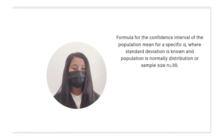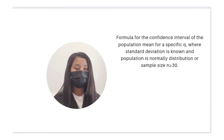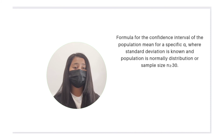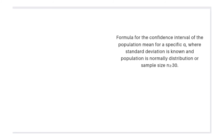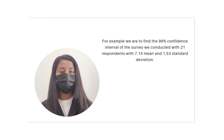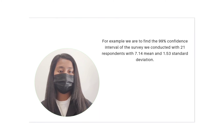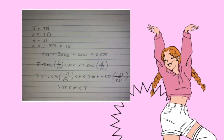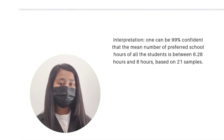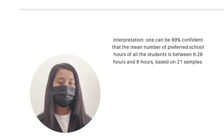The formula for the confidence interval of the population mean for a specific alpha, where the standard deviation is known and the population is normally distributed or the sample size n is greater than or equal to 30. For example, we are to find the 99% confidence interval of the survey we conducted with 21 respondents, a mean of 7.14, and a standard deviation of 1.53. Interpretation: one can be 99% confident that the mean number of preferred school hours of all the students is between 6.28 hours and 8 hours, based on 21 samples.